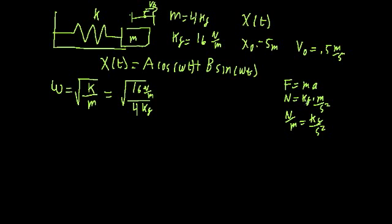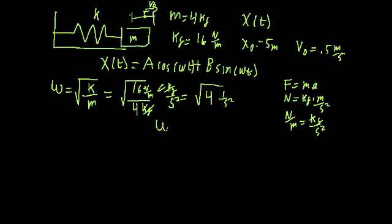Dividing by M on both sides, we write the units as kilograms per second squared divided by kilograms — the kilograms cancel. So we get the square root of 16 divided by 4, which is 4, in units of 1 over second squared. Taking the positive square root, we're left with 2, and 1 over the square root of second squared is just 1 over second. So our angular frequency omega is 2 hertz.